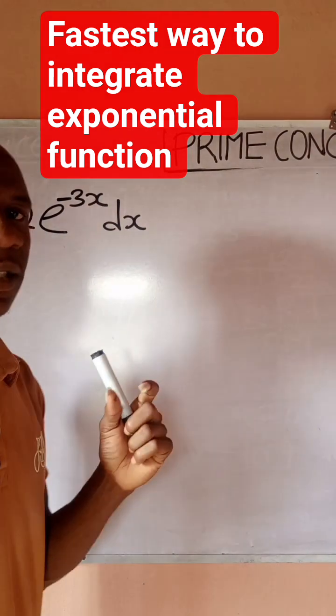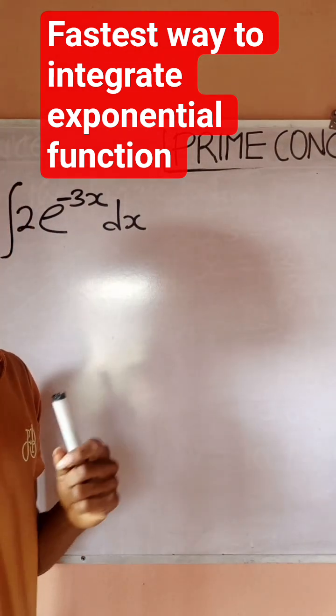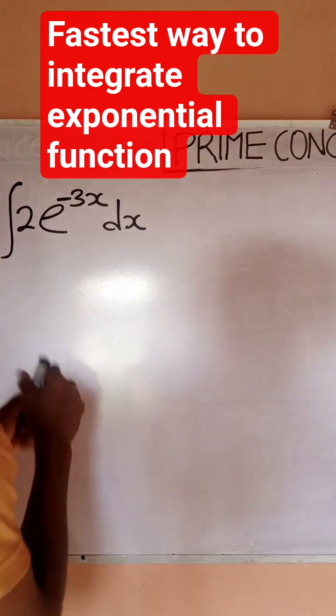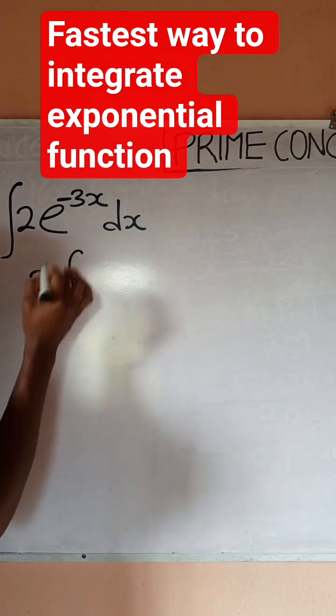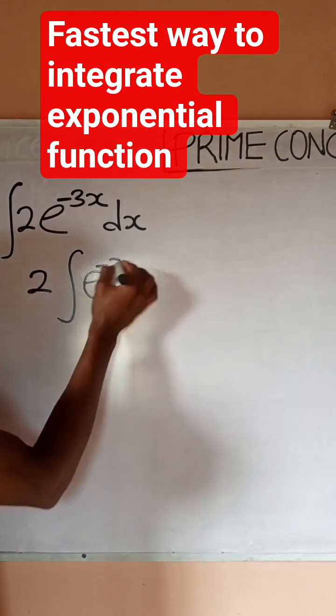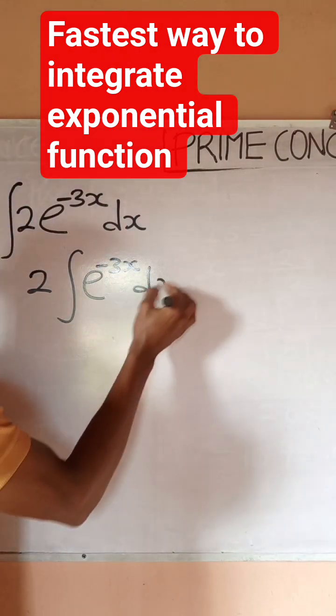Whenever you're integrating, the first thing you want to do is to bring out the constant, bring the constant 2 outside the integral. So I'll have 2 integral of exponential minus 3x dx.